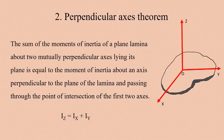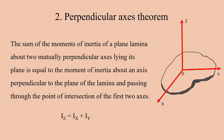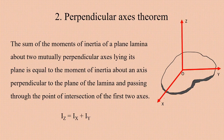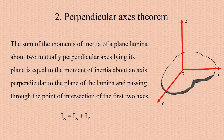Now we are moving to the perpendicular axis theorem. The perpendicular axis theorem helps us to calculate the moment of inertia of a plane lamina — examples include a disk, a mobile, a laptop, or a book. We have three axes: OX and OY are lying in the plane of the lamina, and the third axis OZ is perpendicular to the plane of the lamina.